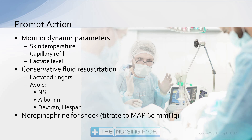Our prompt action is to monitor dynamic parameters such as skin temperature, capillary refill, and lactate level to assess the patient's perfusion. Use a conservative fluid management strategy, recommending lactated Ringer's as a fluid instead of normal saline in COVID sepsis patients. We're trying to avoid albumin, dextran, and Hespain, all of which are associated with poorer outcomes in COVID sepsis. Use norepinephrine for shock and titrate to a mean arterial pressure of around 60 to ensure we are perfusing all vital organs.